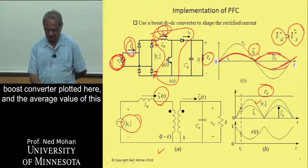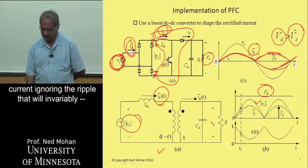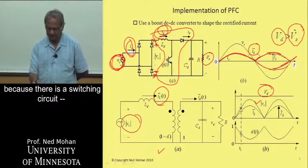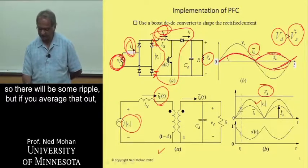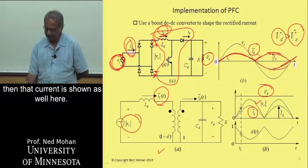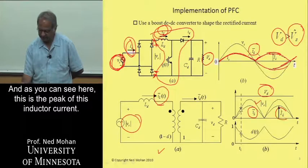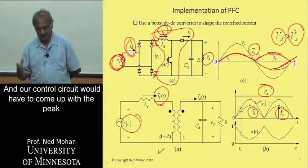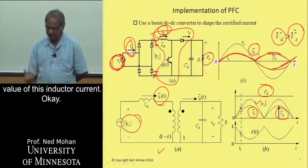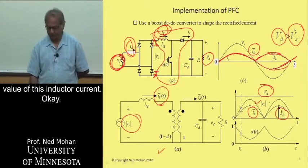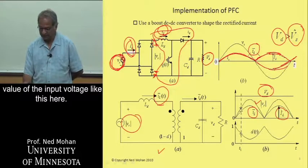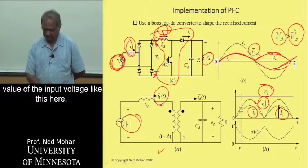The average value of this current — ignoring the ripple that will invariably be there because there is a switching circuit — is shown here as well. As you can see, this is the peak of this inductor current, and our control circuit would have to come up with the peak value of this inductor current. The shape should be exactly like the absolute value of the input voltage.